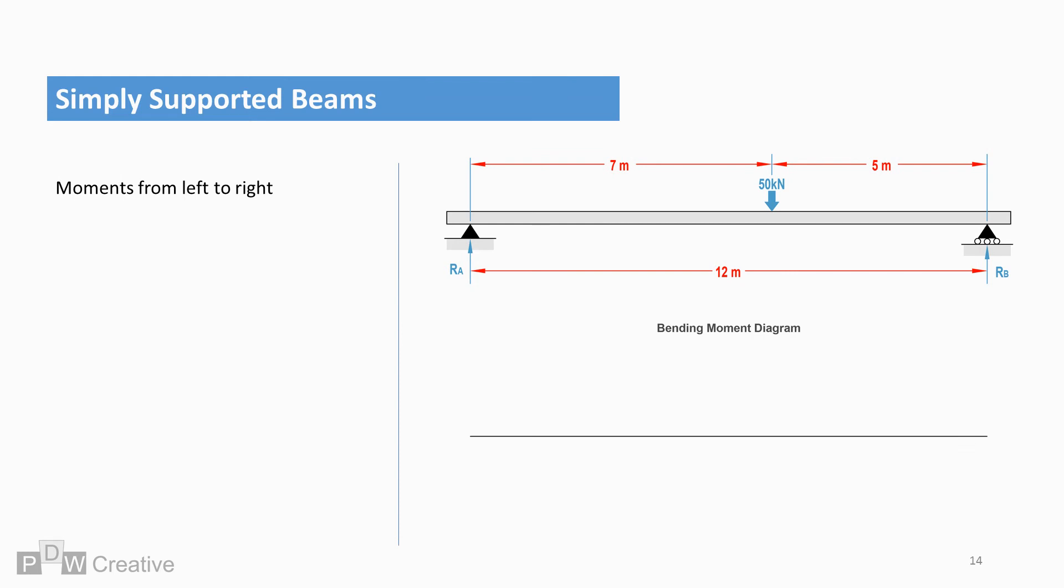Bending moments can be plotted in the form of a bending moment diagram. This helps identify the peak bending moment position. It can also show whether the moment direction is upward, meaning positive, sometimes referred to as sagging,